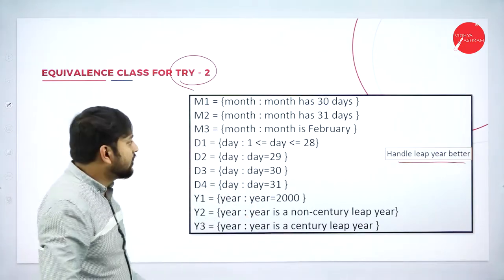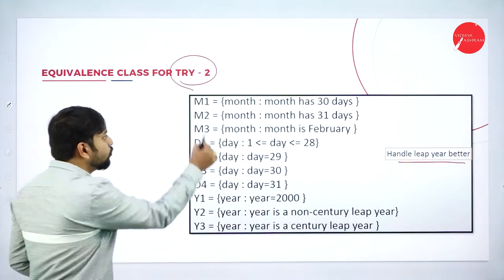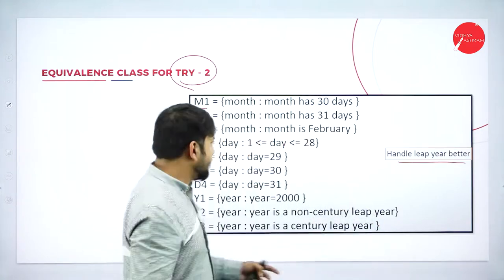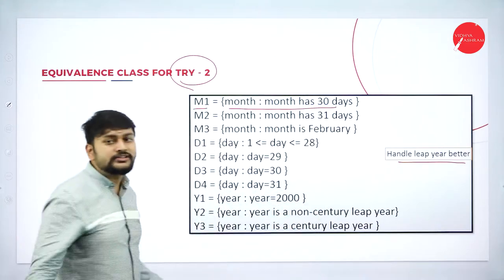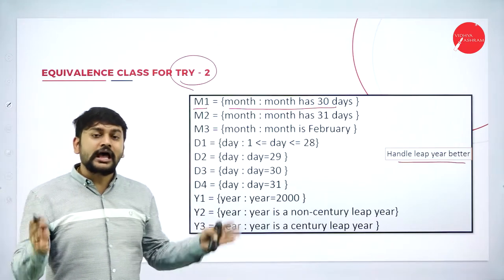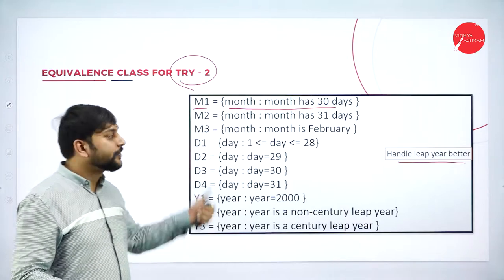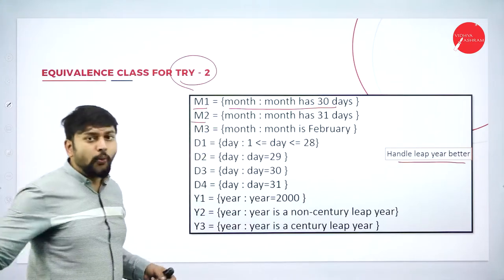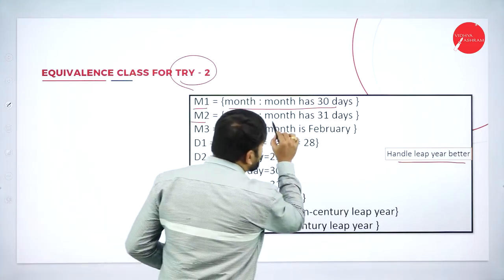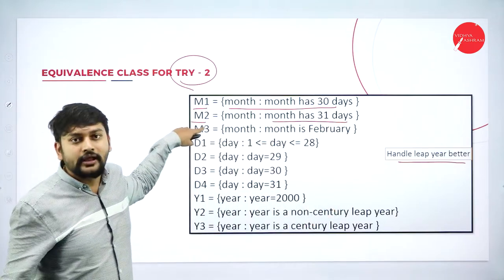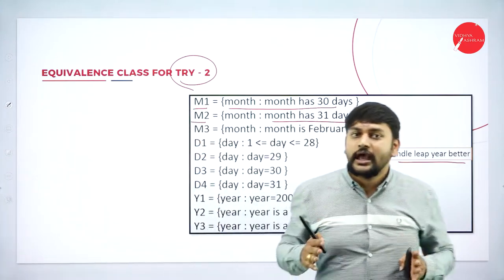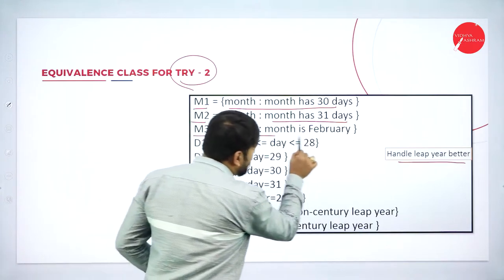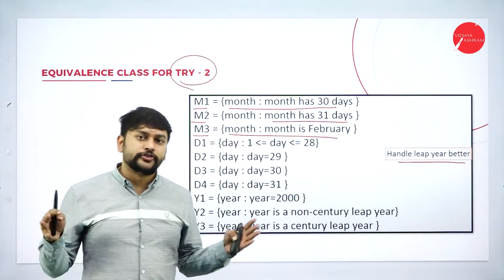Let me explain the conditions from the beginning. I have M1 — M1 is my condition for months which have 30 days; all such months are treated as M1. The second condition, M2, represents all months which have 31 days. For M3, I will be treating it as February specifically.